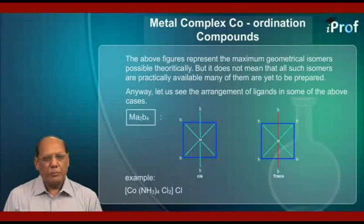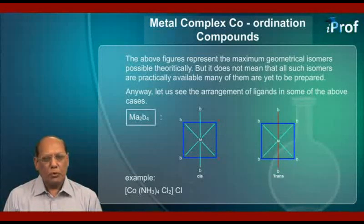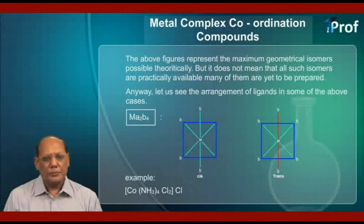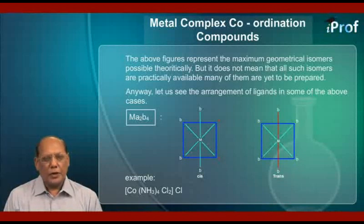Let us begin with MA2B4 — two monodentate ligands of one type and four monodentate ligands of another type. As shown in the figures here, this will have two geometrical isomers: cis and trans. In the cis form, the two A ligands are cis. In the trans form, the two A ligands are trans to one another.